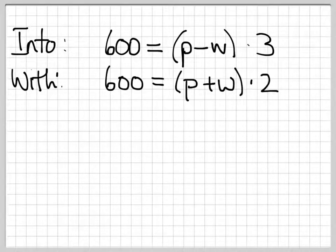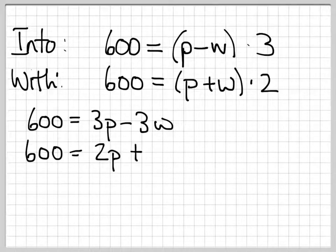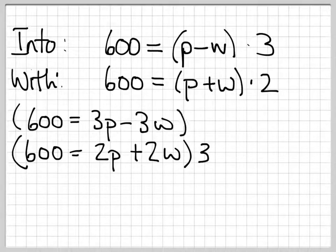So let's go ahead and distribute. We get 600 equals 3p minus 3w and 600 equals 2p plus 2w. Now we need to go ahead and eliminate. So let's multiply the bottom by 3 and the top by 2 to get our new equations.